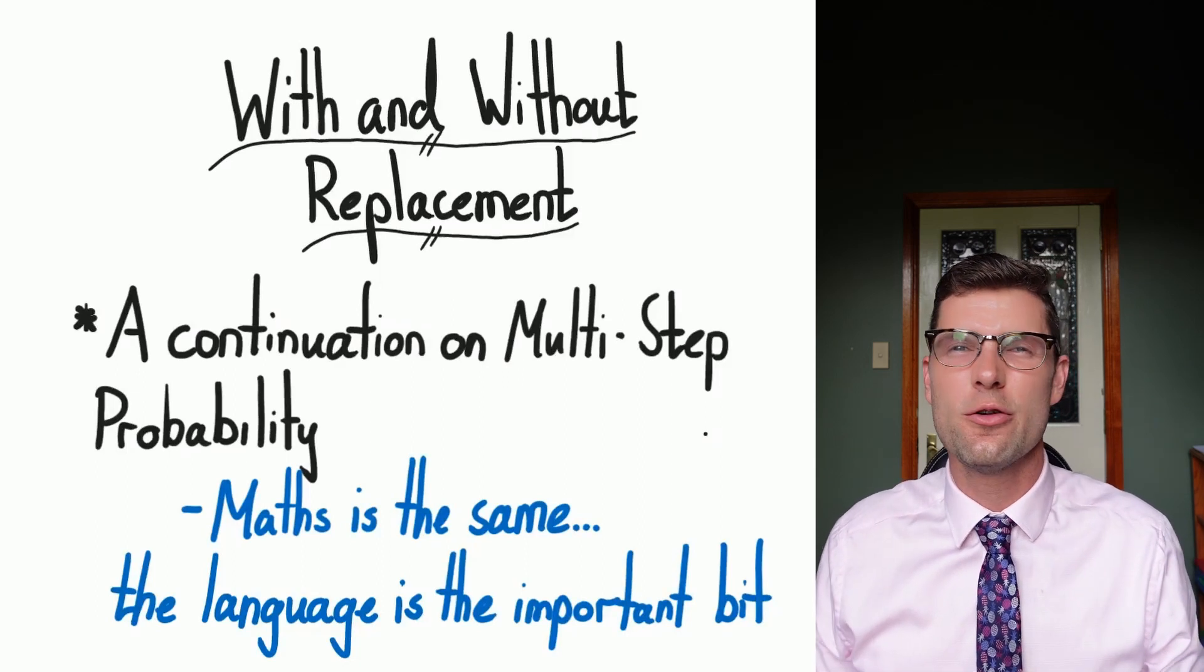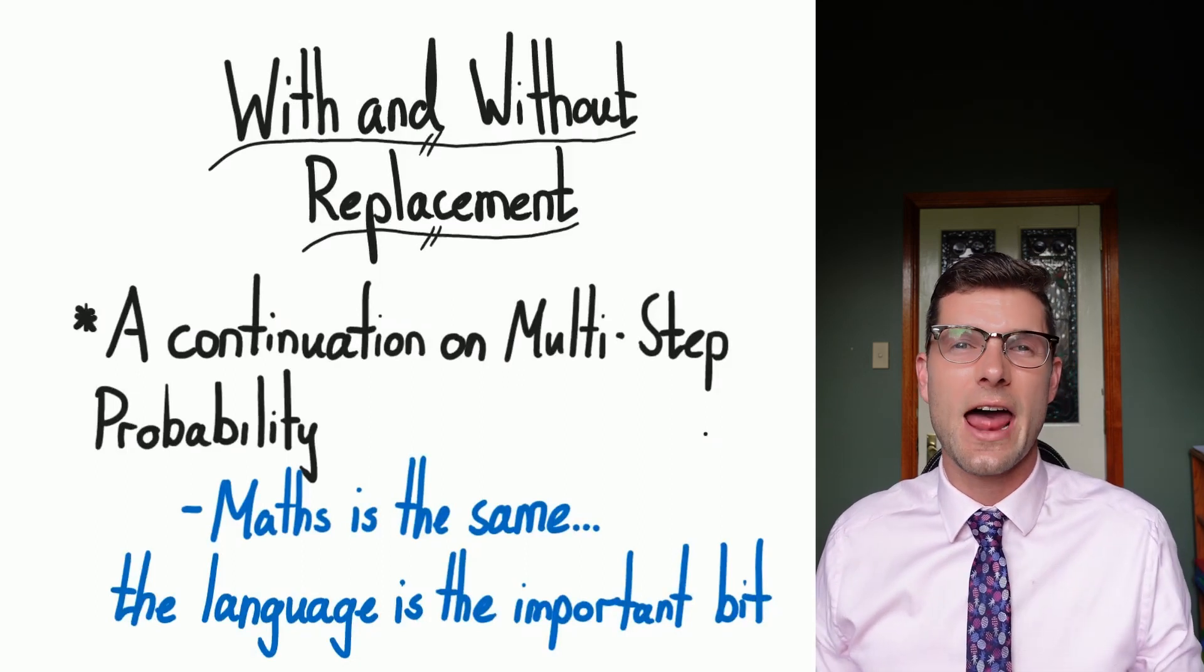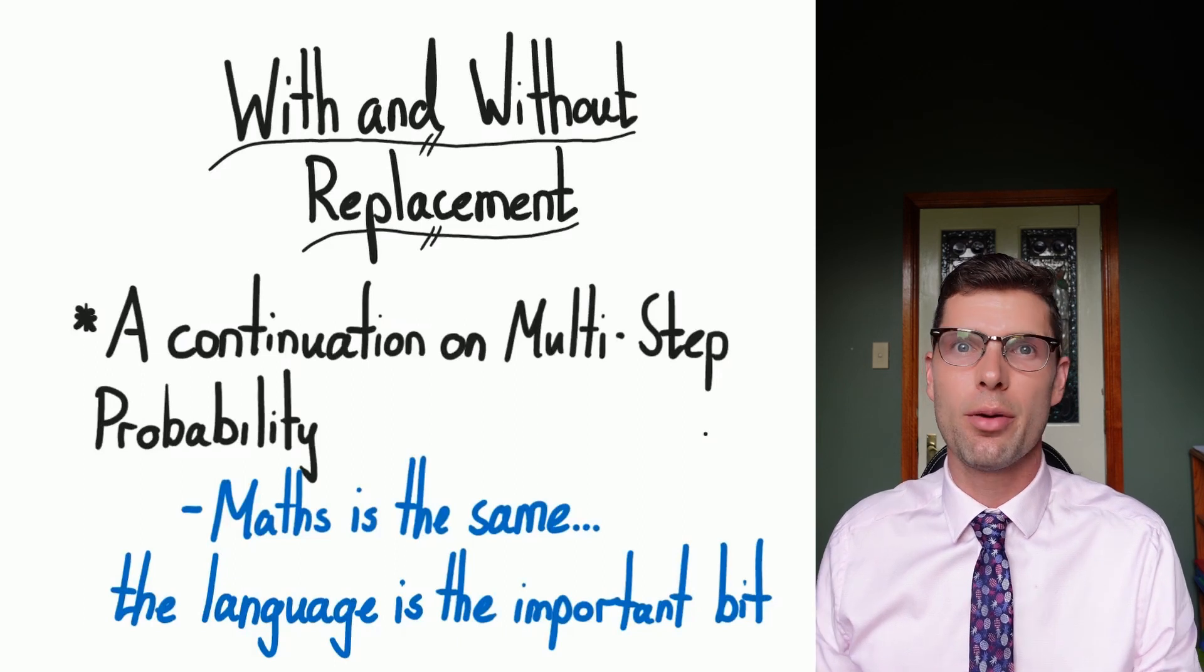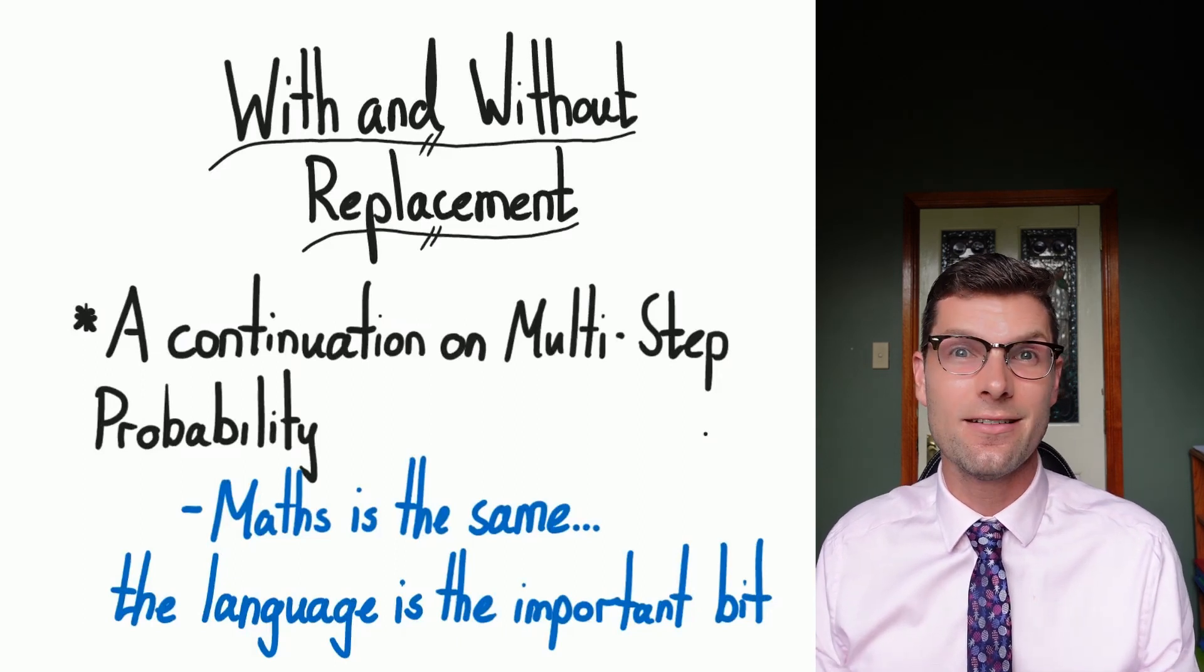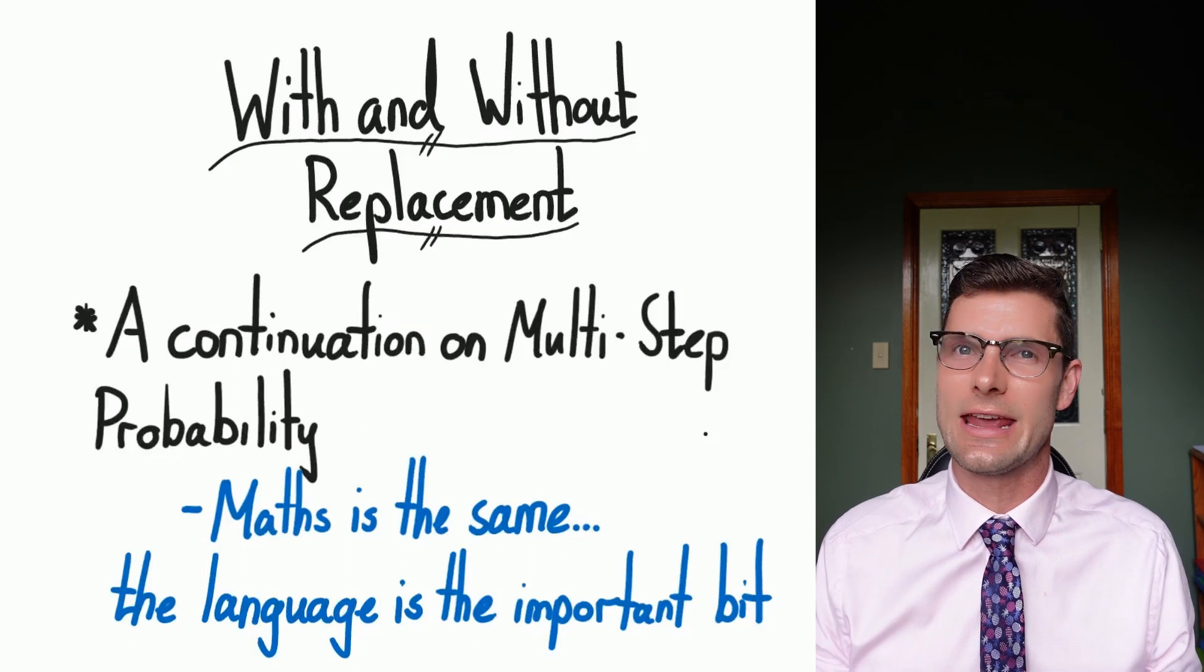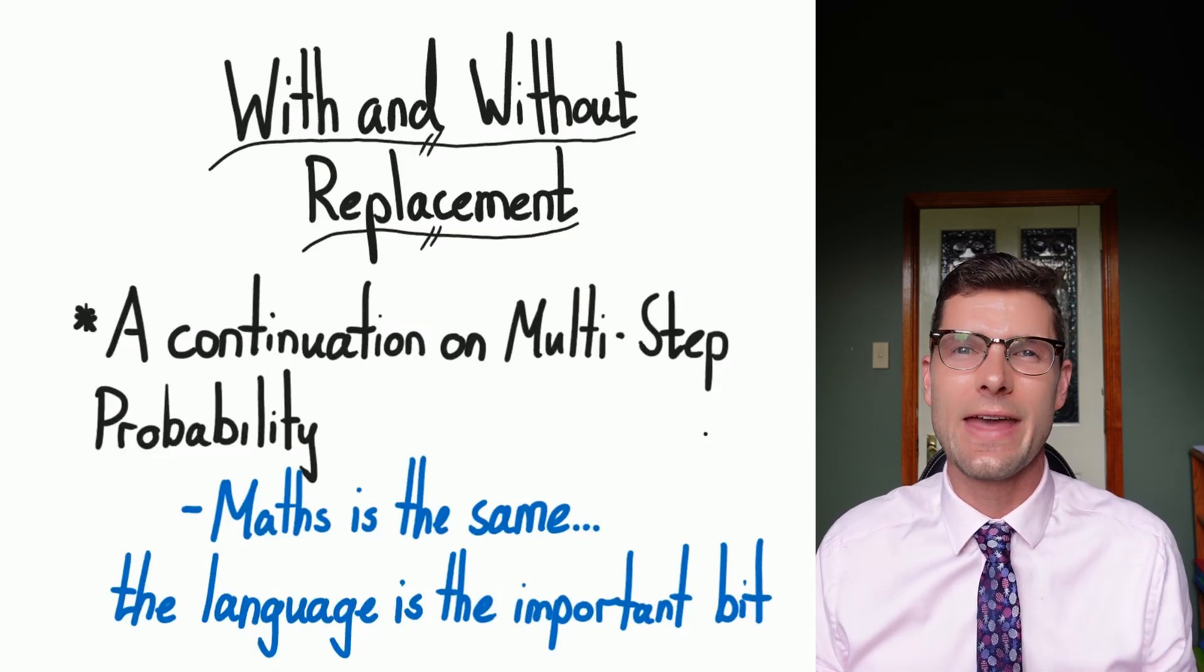What's going on everyone, you're back with your boy Jono for another quick math lesson. Today we're going to look at multi-step probability experiments again, but this time we're really looking at two key words: with and without replacement.